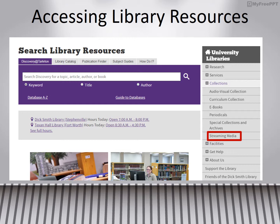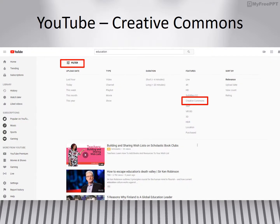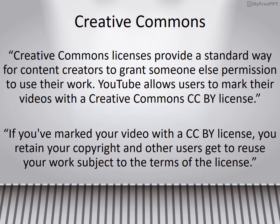Additionally, there are free web resources that allow for non-commercial use. TED Talks allow their videos to be shown in a non-commercial setting as long as you access their content from their website or from the official TED Talk YouTube channel. YouTube allows users who upload original content to mark their videos with a Creative Commons license for reuse — you can search for videos with Creative Commons licensing by performing your search first, then clicking the filter link under the search bar and selecting Creative Commons under the Features option. Creative Commons licensing is a standard way for content creators to grant someone permission to use their work. It's important to note that there are different types of Creative Commons licensing, so it's imperative that you check the license.